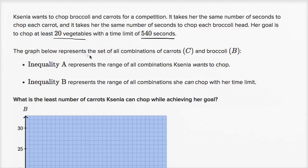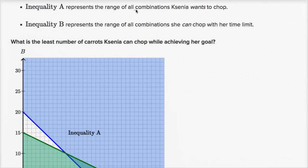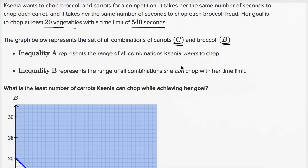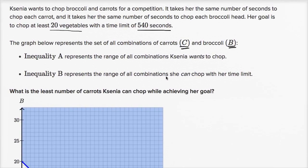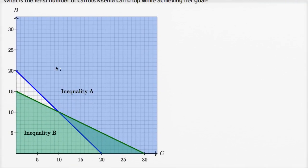The graph below represents the set of all combinations of carrots and broccoli. Inequality A represents the range of all combinations Ksenia wants to chop, because she wants to chop at least 20 vegetables. So that's what Inequality A is representing, that she wants to chop at least 20 vegetables.